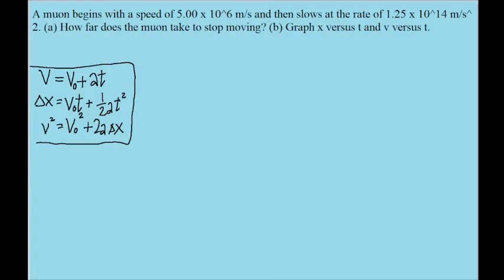So the problem gives us the muon's initial speed, v-naught. It gives us the muon's final speed. It says how long does it take for the muon to stop moving, so we know that its final speed is just zero, so that's given to us as well. And it also gives us the acceleration of the muon.